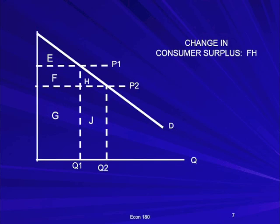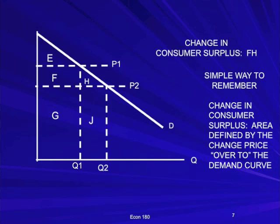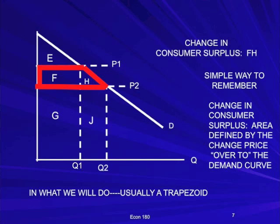Here's a quick trick on how to remember this. The change in consumer surplus is always going to be the area defined by the change in price over to the demand curve. The difference in price is P1 to P2 — that vertical distance. The area over to the demand curve is this trapezoid, F plus H. If the price falls, it's an increase in consumer surplus. If it was a price rise from P2 to P1, it would be a loss of consumer surplus. Virtually every example we're going to be doing, the change in consumer surplus is that trapezoid.